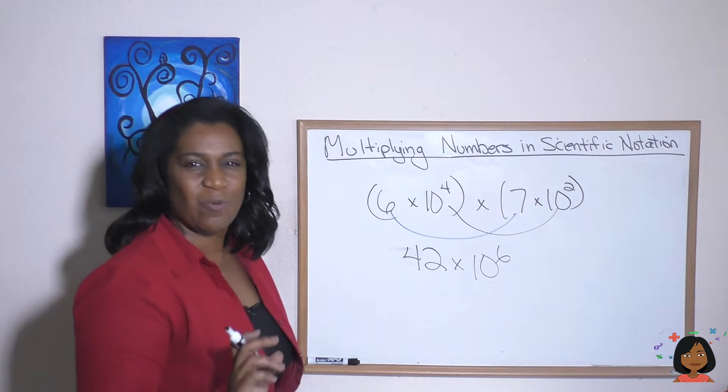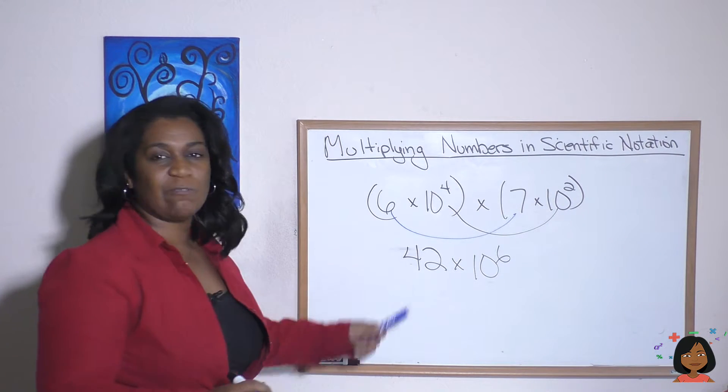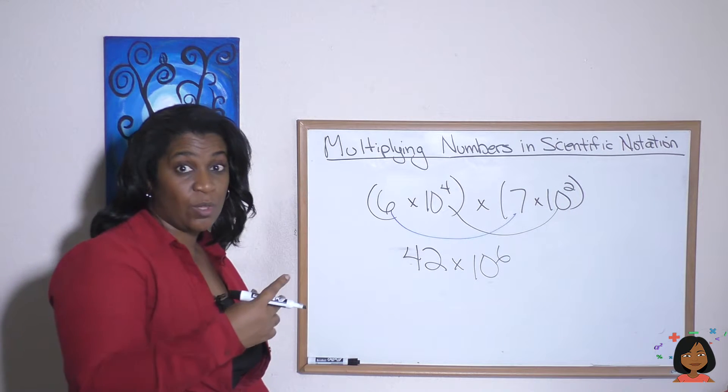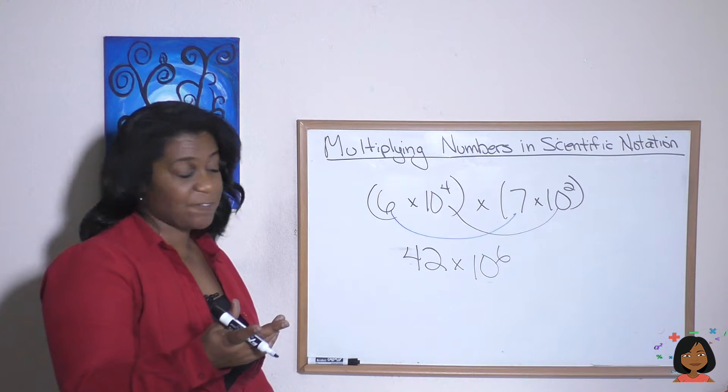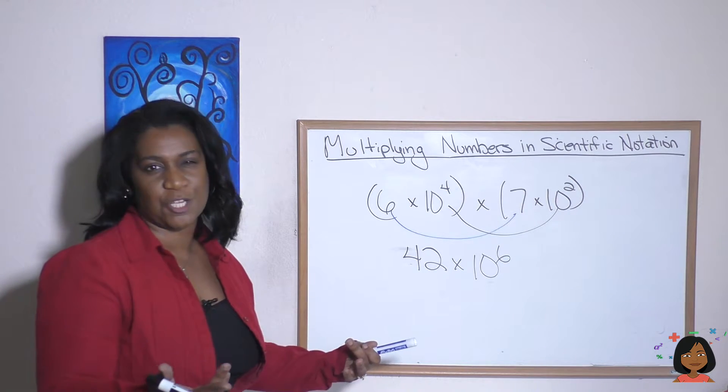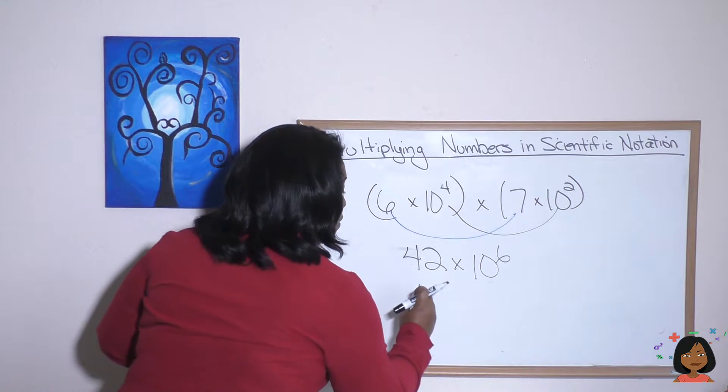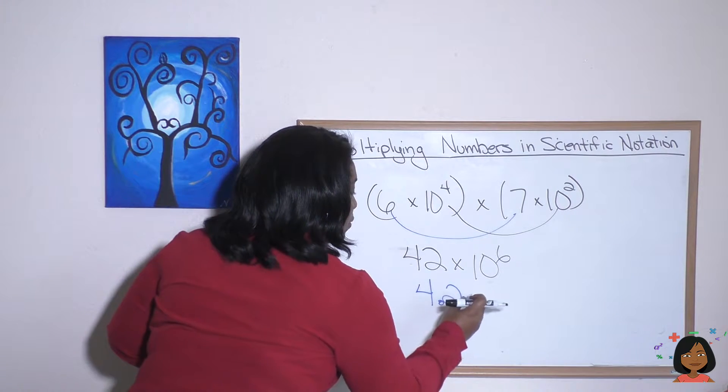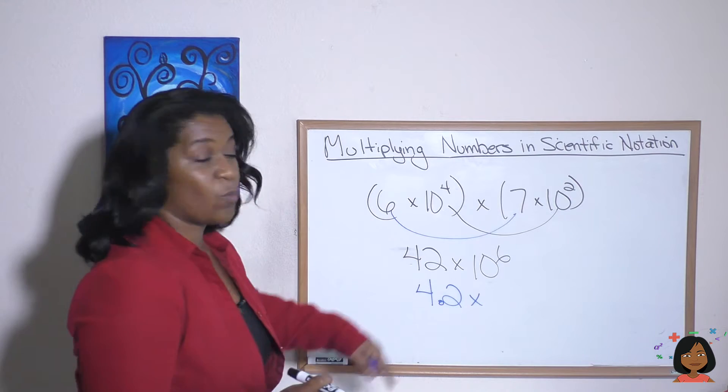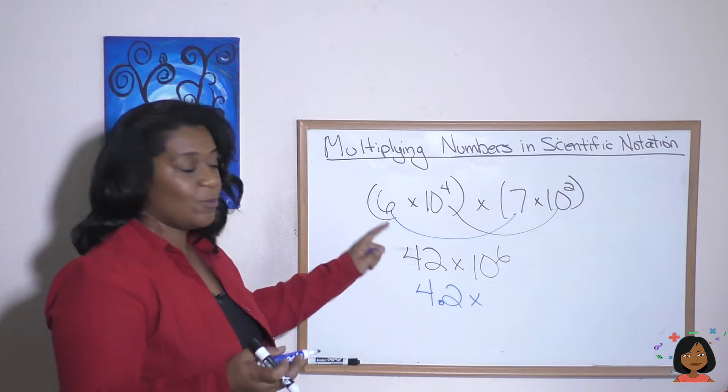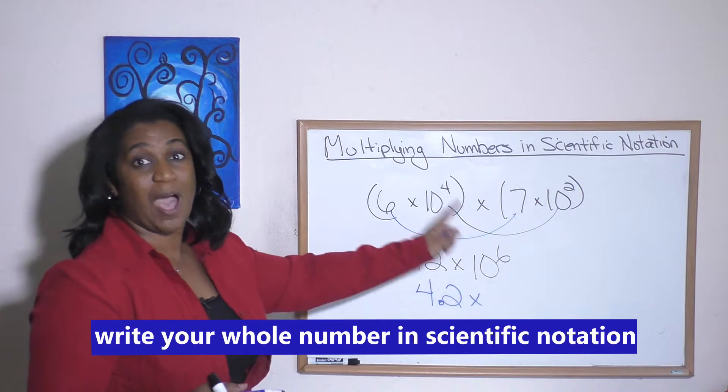But wait a second. Are we done? This is not how we write scientific notation. Scientific notation has one whole number and then maybe a decimal right after it. So it shouldn't say 42. It should say 4.2, correct? So we are going to need to add one other power of 10, move that decimal one to the left, which means this power of 10 is going to go up by one.